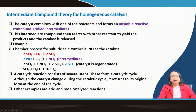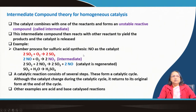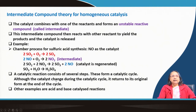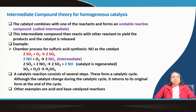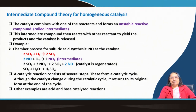Here the intermediate is a compound — NO₂ — whereas in the last case it was an ion. In homogeneous catalysis, some intermediate must always be formed. A catalytic reaction consists of several steps that form a catalytic cycle. Although the catalyst changes during the cycle, it returns to its original form at the end. Other examples include acid- and base-catalyzed reactions.